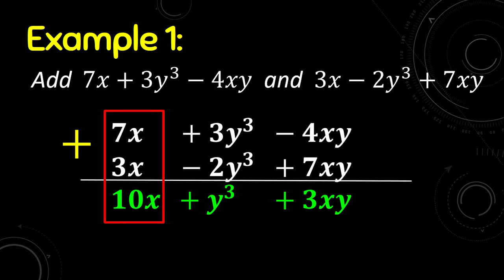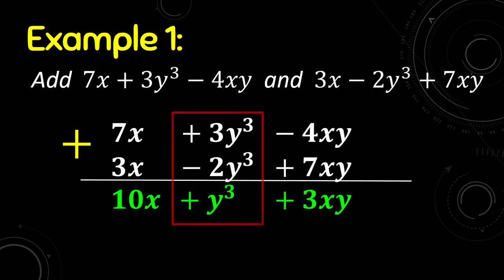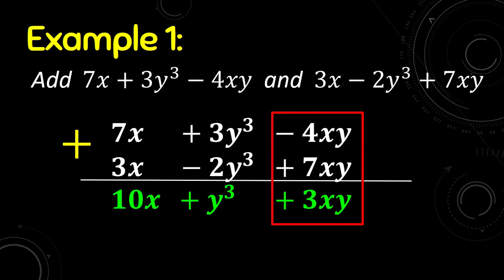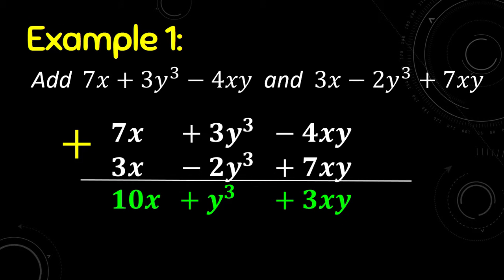In adding polynomials, we just copy the variables. So 7x plus 3x is 10x. Next, 3y³ minus 2y³ is 1y³, but we don't write the 1, so we have y³. Then negative 4xy plus 7xy is 3xy. The sum of the given polynomials is 10x plus y³ plus 3xy.